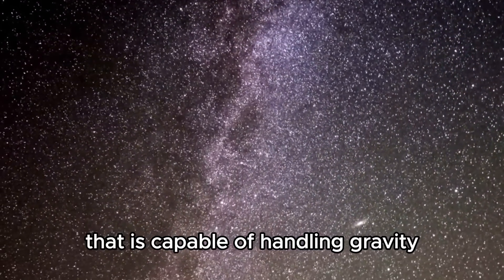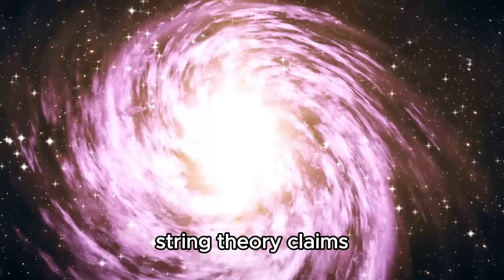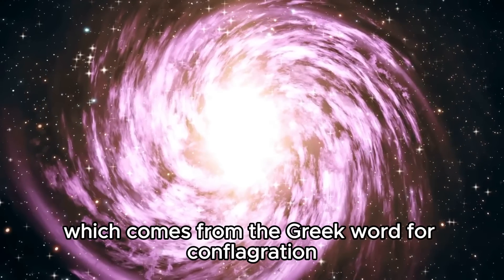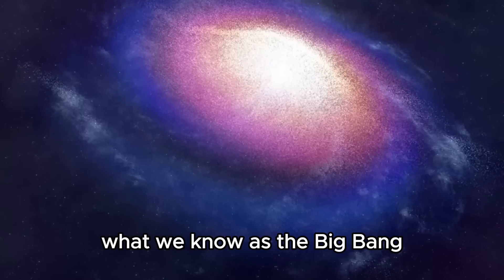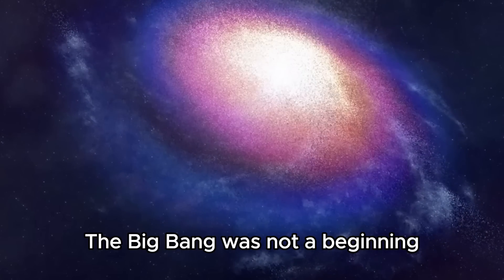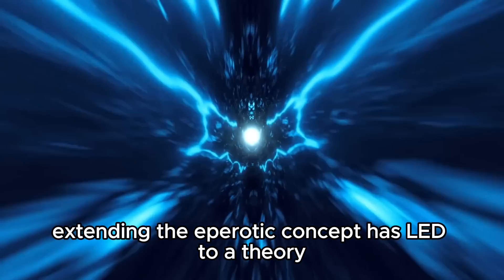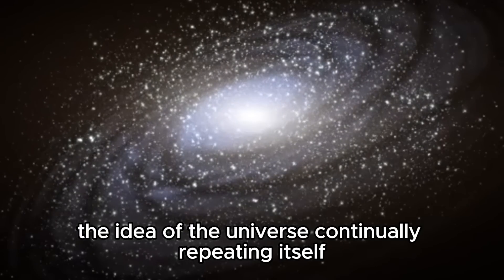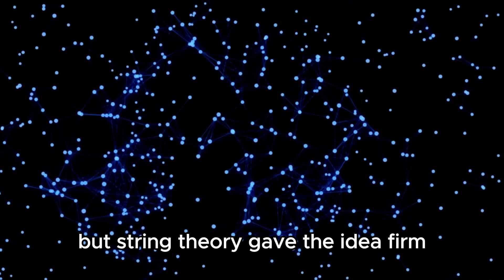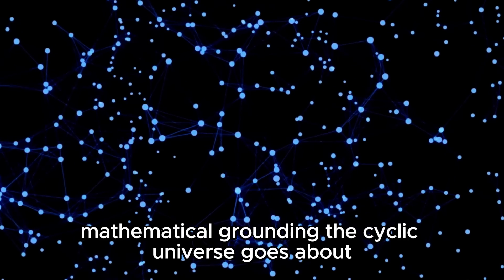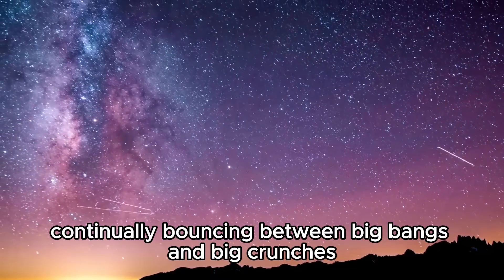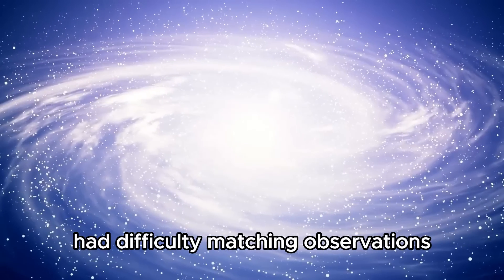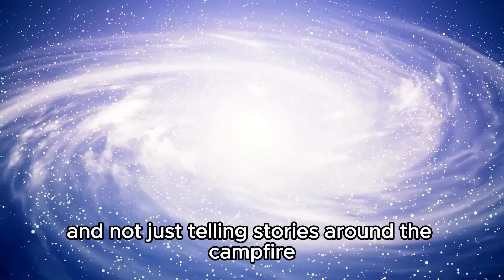One of the earliest string theory notions is the ekpyrotic universe, which comes from the Greek word for conflagration or fire. In this scenario, what we know as the Big Bang was sparked by something else happening before it. The Big Bang was not a beginning but one part of a larger process. Extending the ekpyrotic concept has led to a theory called cyclic cosmology. Technically, the idea of the universe continually repeating itself is thousands of years old and predates physics. But string theory gave the idea firm mathematical grounding. The cyclic universe goes about exactly as you might imagine, continually bouncing between Big Bangs and Big Crunches, potentially for eternity back in time and for eternity into the future. As cool as this sounds, early versions of the cyclic model had difficulty matching observations, which is a major deal when you're trying to do science and not just telling stories around the campfire.